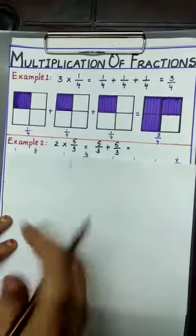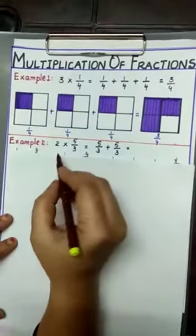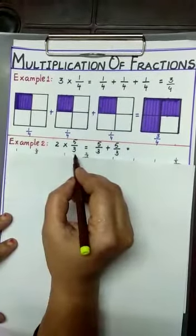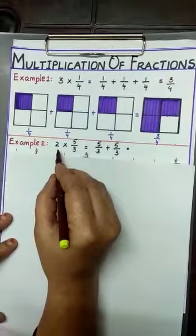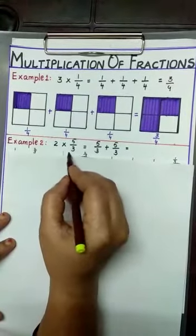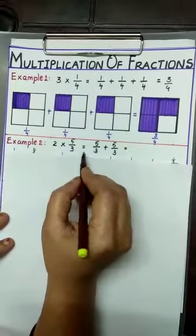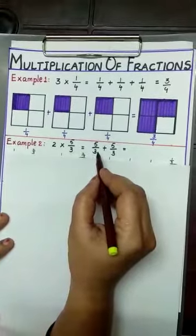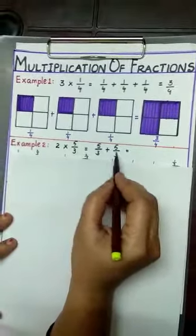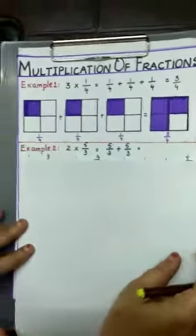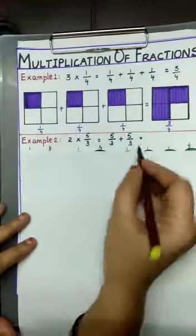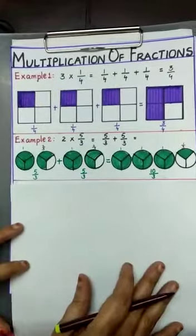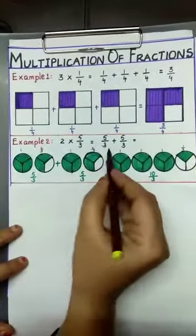Now let us see another example: multiplication of a whole number by an improper fraction. Consider 2 into 5/3. What does 2 into 5/3 mean? It means we are adding 5/3 two times: 5/3 plus 5/3. Now let us see how to represent this through pictures.